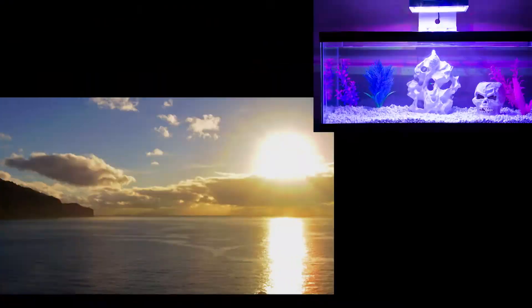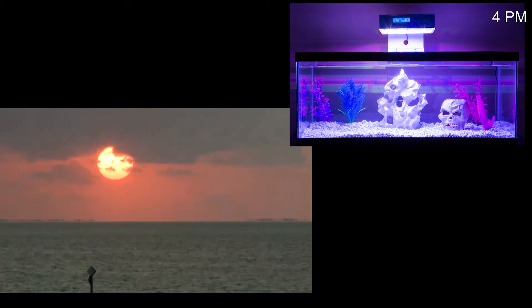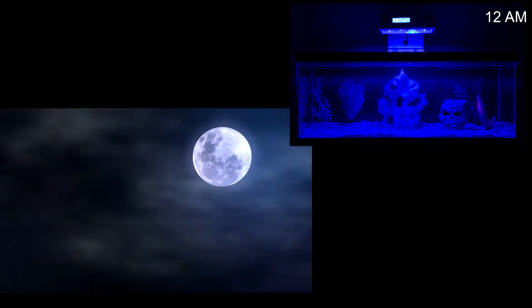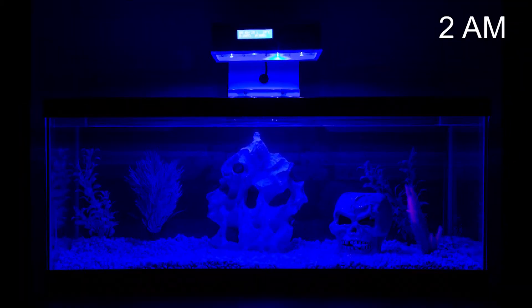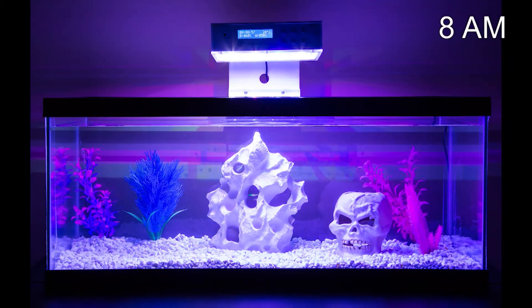The programmable controller can be set to simulate sunrise and sunset with variable light intensity for each hour of the day, giving complete control over fish tank illumination.